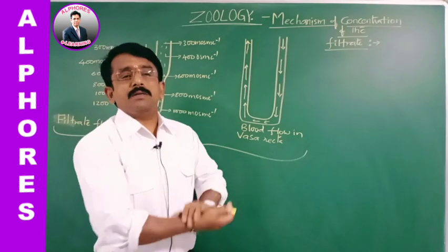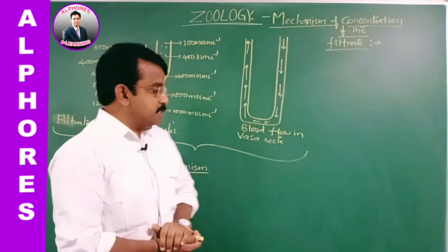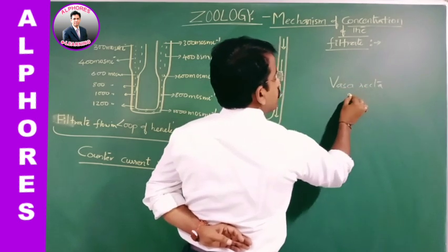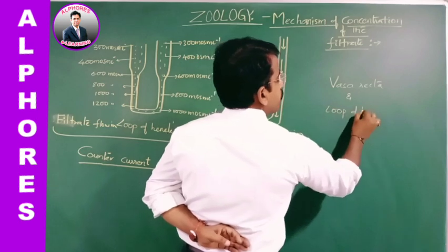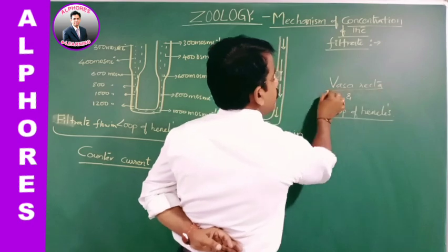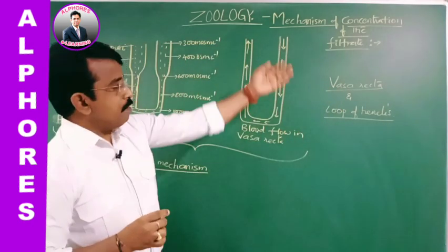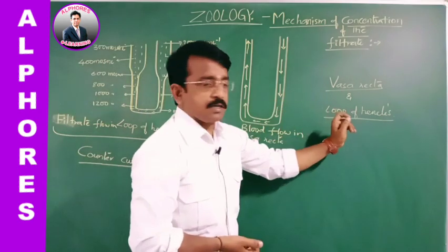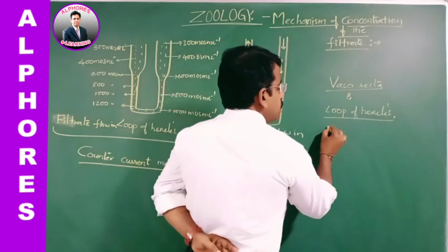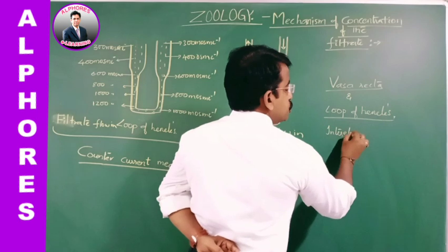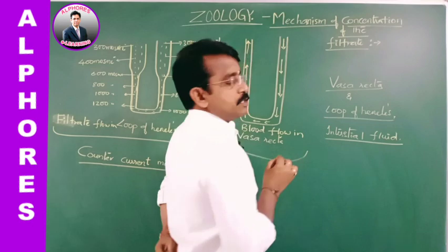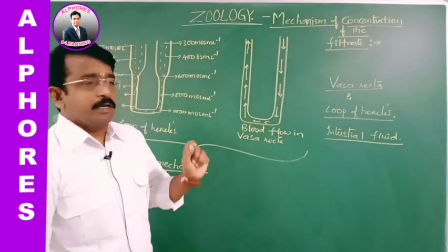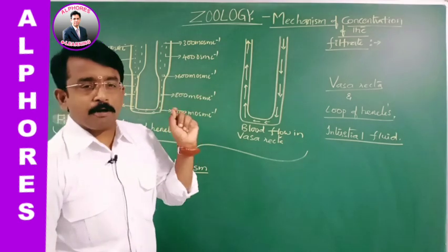This is how hypertonic urine is formed. The main reason behind this is the role played by Vasa Recta and the loop of Henle. The major role in the formation of concentrated filtrate — hypertonic urine formation — is because of the role played by Vasa Recta, loop of Henle, and the interstitial fluid, which plays a vital role.